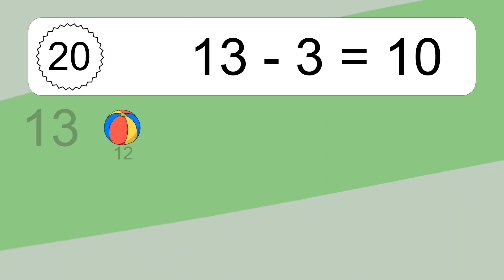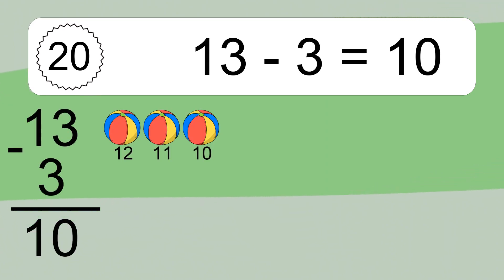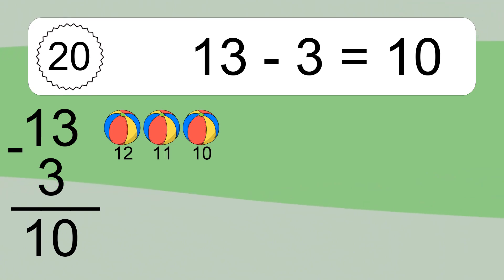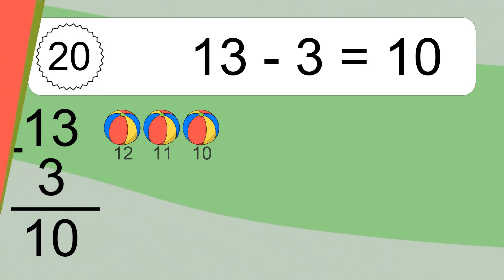13 minus 3 equals what? 13 minus 3 equals 10. Let's count it: 12, 11, 10. We'll see you next time.